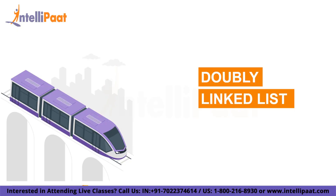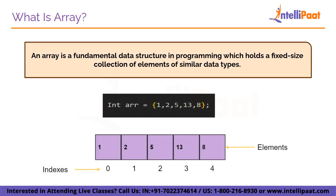Before we start our topic, let's have a quick recap about what is an array and what is a singly linked list. An array is a fundamental data structure in programming which holds a fixed size collection of elements of similar data types. Here we have created an array of integer data types which contains the elements 1, 2, 5, 13, and 8. We cannot add char or float data types in this list — for example, we cannot add 1.1 or 'hello'.